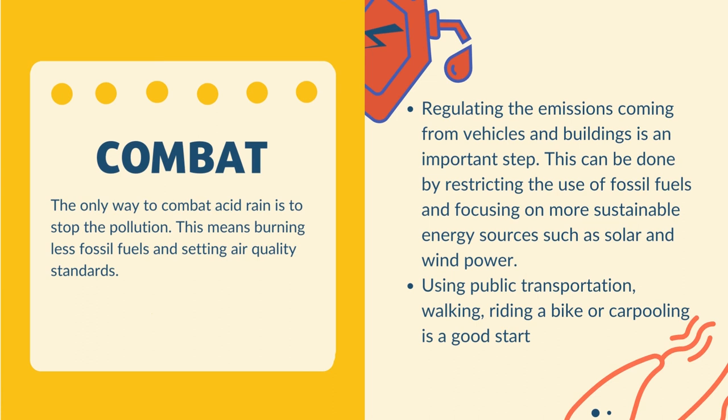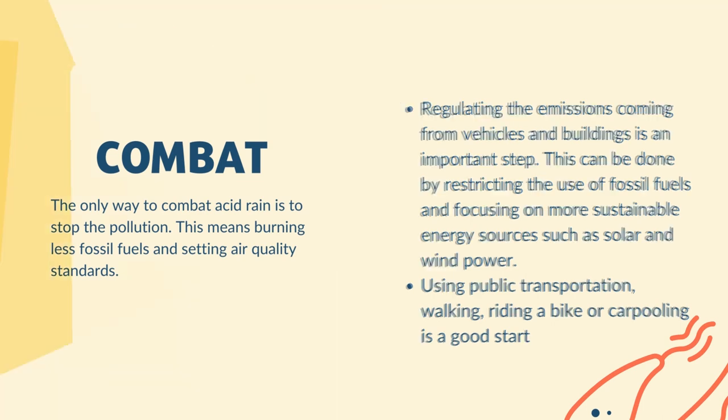The only way to combat acid rain is to stop the pollution. This means burning less fossil fuels and setting air quality standards. The problems of acid rain will continue as long as gasoline is used, and countries like China and India, which rely heavily on coal to produce electricity and iron, suffer the consequences. Another study found that acid rain in China may have contributed to deadly landslides. In 2009, China introduced regulation of sulfur dioxide emissions, which have dropped 75% since 2007.